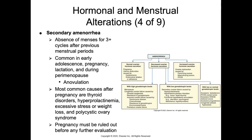Secondary amenorrhea occurs when someone who previously had menstrual periods experiences an absence of menses for three or more cycles, with the end result being anovulation. This commonly occurs in early adolescence, pregnancy, lactation, or perimenopause — which is gaining more research interest as we look for tools to make the side effects of menopause more tolerable.